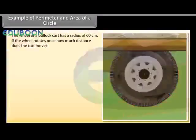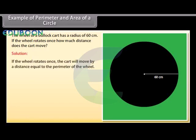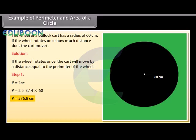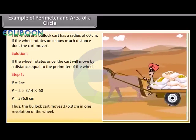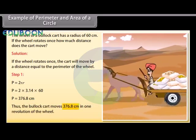Example 3: The wheel of a bullock cart has a radius of 60 centimeters. If the wheel rotates once, how much distance does the cart move? Solution: If the wheel rotates once, the cart moves a distance equal to the perimeter of the wheel. Using p = 2πr and substituting the values, p = 376.8 centimeters. Thus the bullock cart moves 376.8 centimeters in one revolution of the wheel.